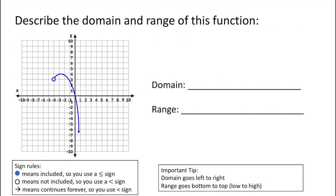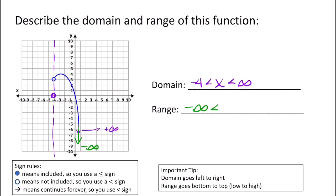Let's try describing the domain and range of this function. We have a left boundary for x, but it goes on forever to the right with an arrow, heading to positive infinity. At negative 4 we have an open circle, so the domain is negative 4 less than x less than positive infinity. For the range, the graph is going down, but remember — up or down doesn't affect the domain. Domain is only left to right. For the range, the lowest value — well, we don't know it because the graph is going down, so it's headed to negative infinity.